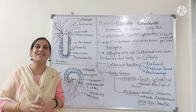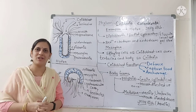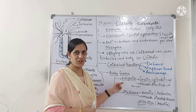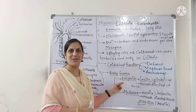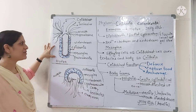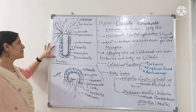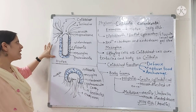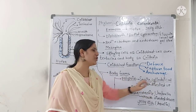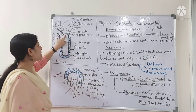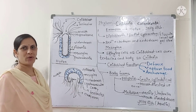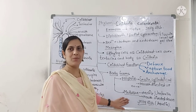Cnidarians are available in two different body forms. The first body form is the polypoid body form, which is cylindrical. Hydra is a polypoid body form — it is sessile and cylindrical, its mouth is directed upwards, and around the mouth you will get tentacles. Sea anemone is one more example of the polypoid form.